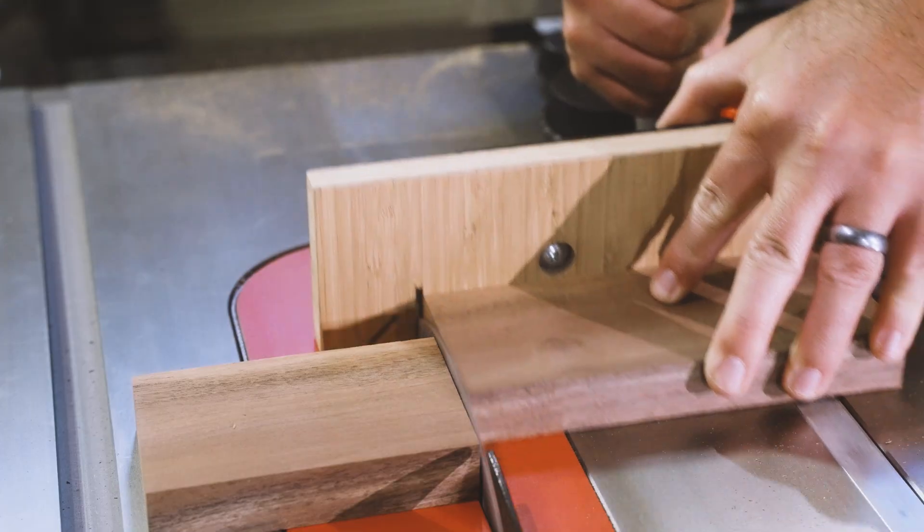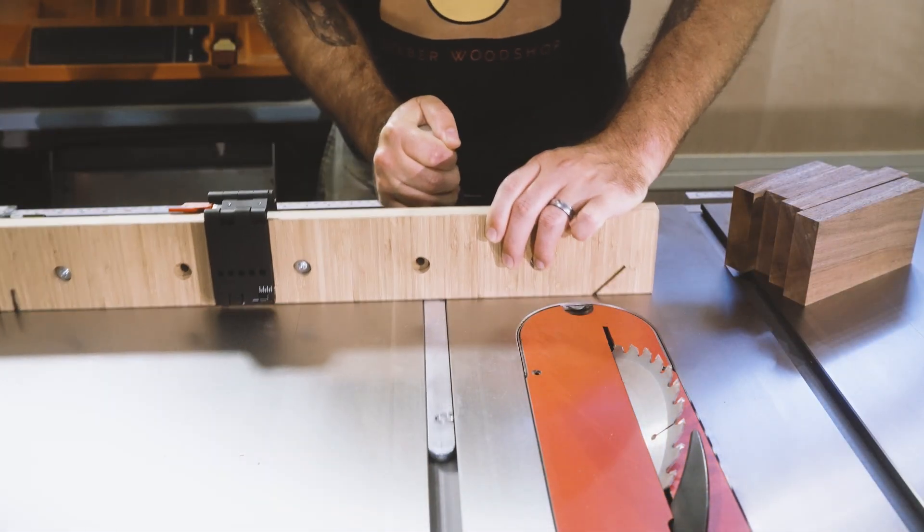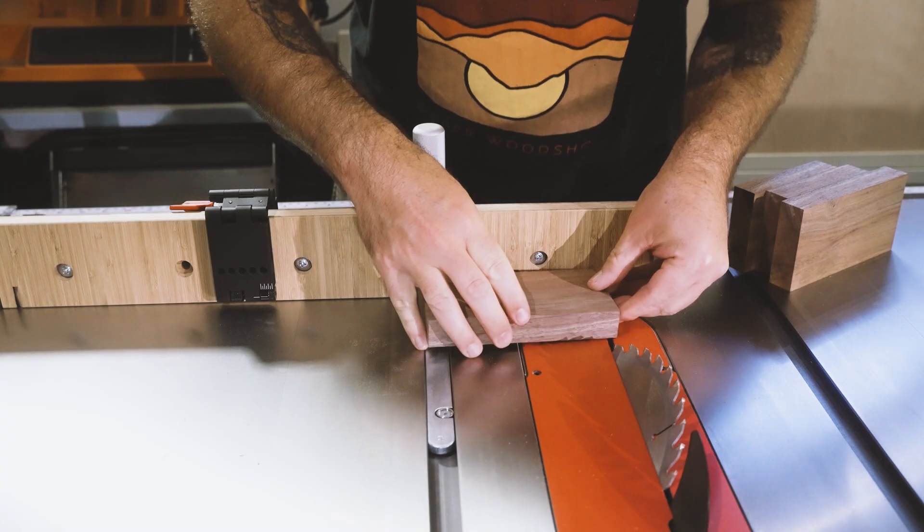After cutting the walnut sides of my box to length, I set the blade angle to 45 degrees and placed the miter gauge on the other side of the blade to cut my miters.